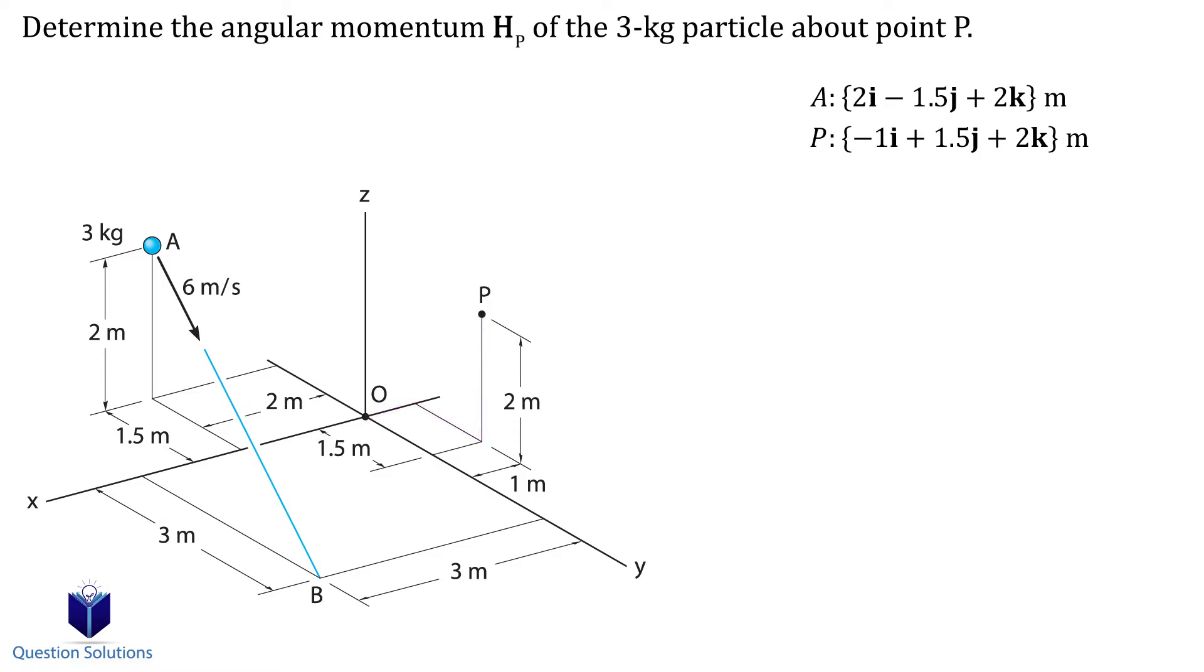Now we need a position vector from point P to the starting location of A. If you picked point B, then you would need a position vector from point P to B. So our position vector is each coordinate of point A minus each coordinate of point P. Let's simplify it.